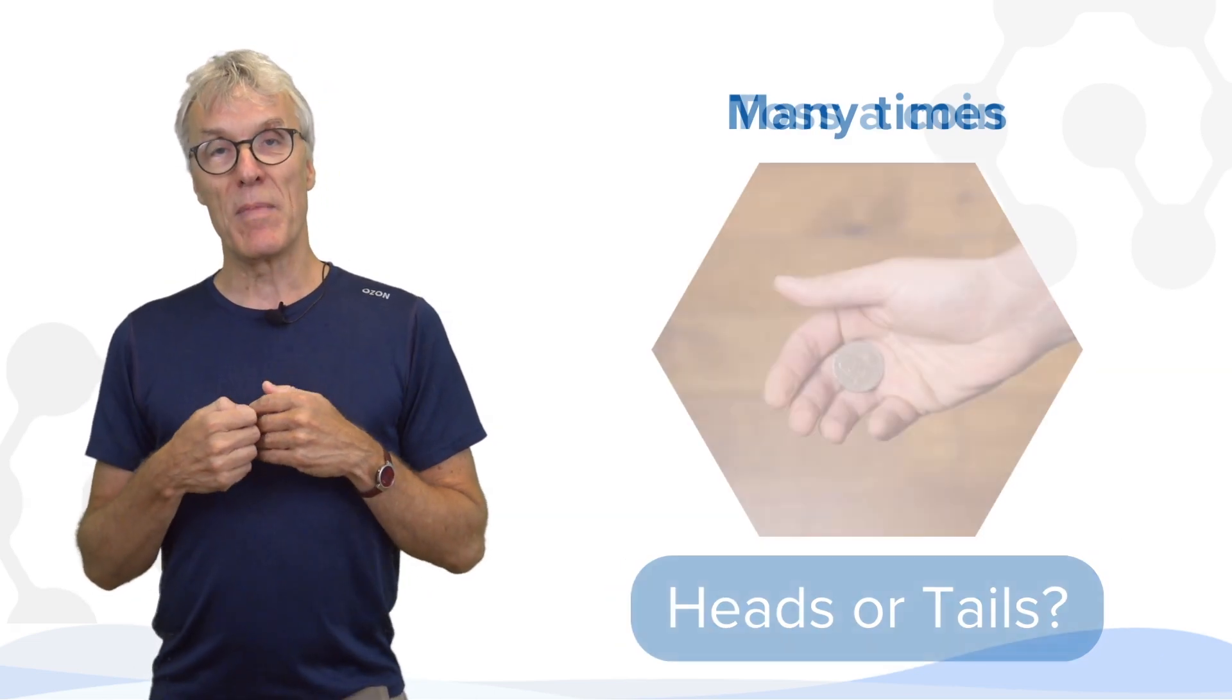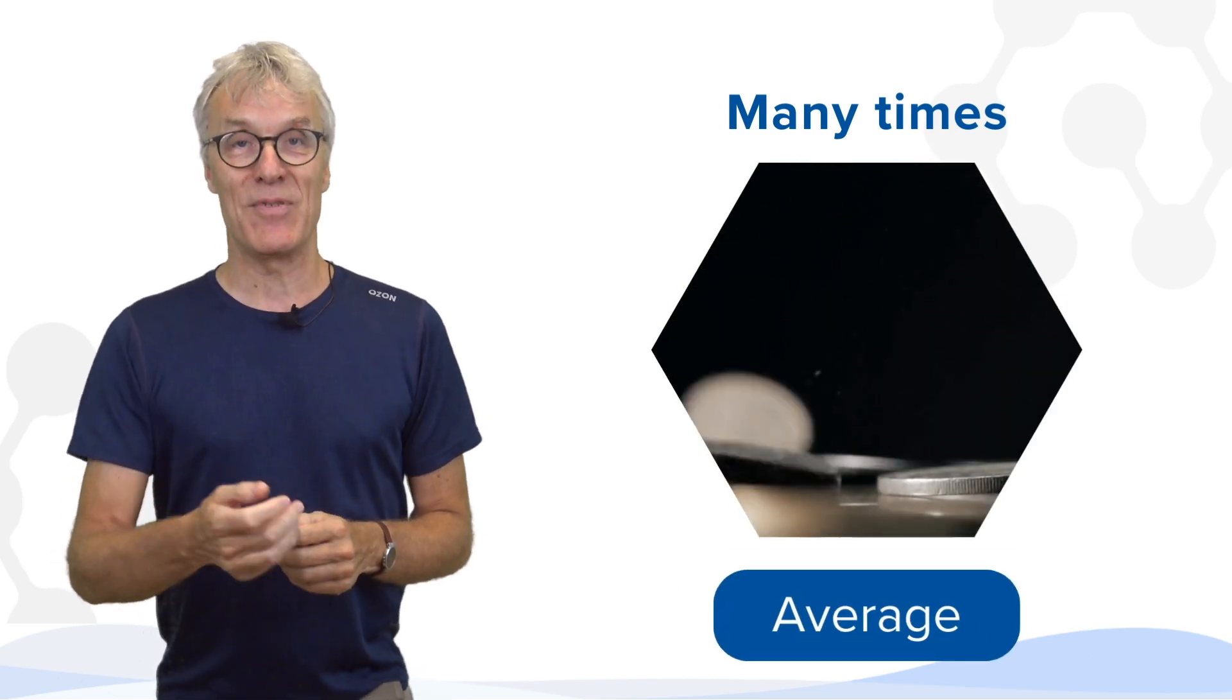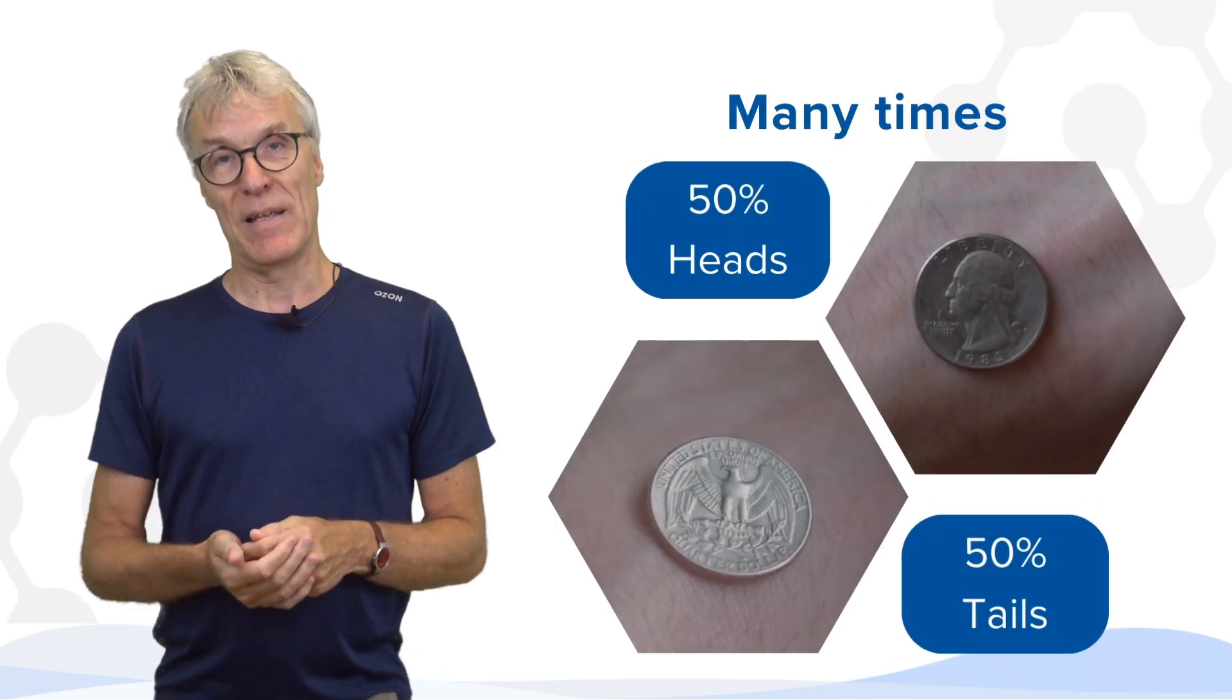If you do the experiment many, many times, you know what you will get on average. You know that if you toss a coin a million times, you will get roughly half a million heads and half a million tails.